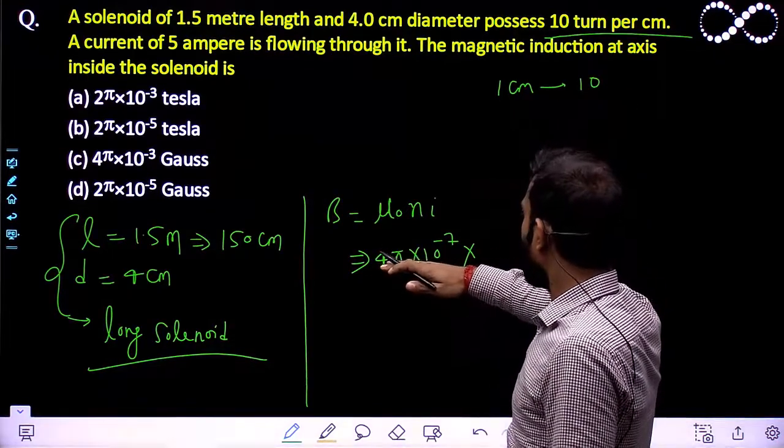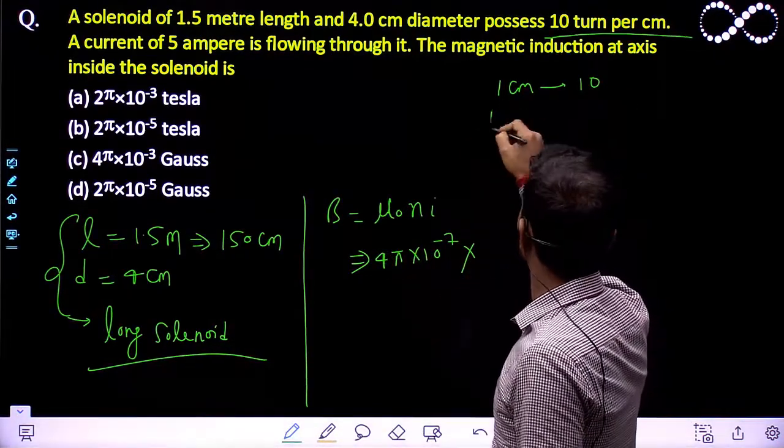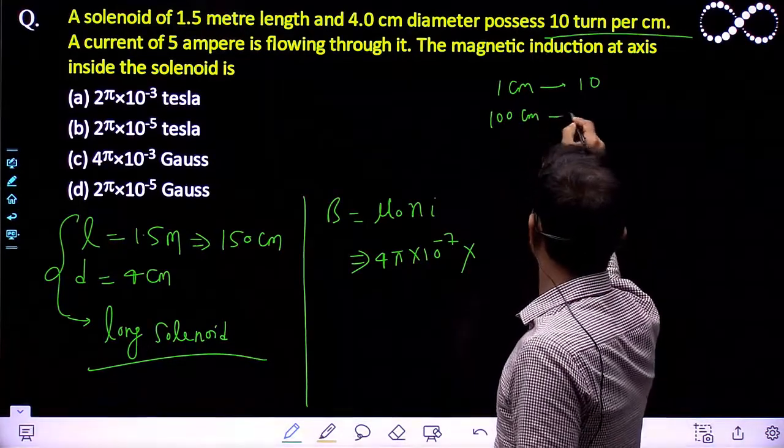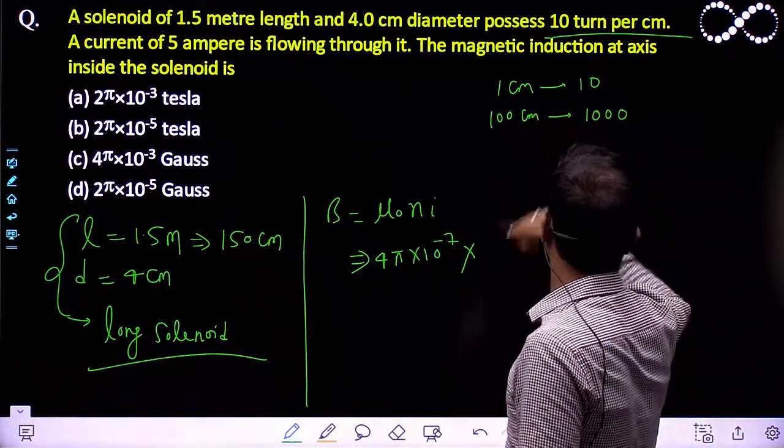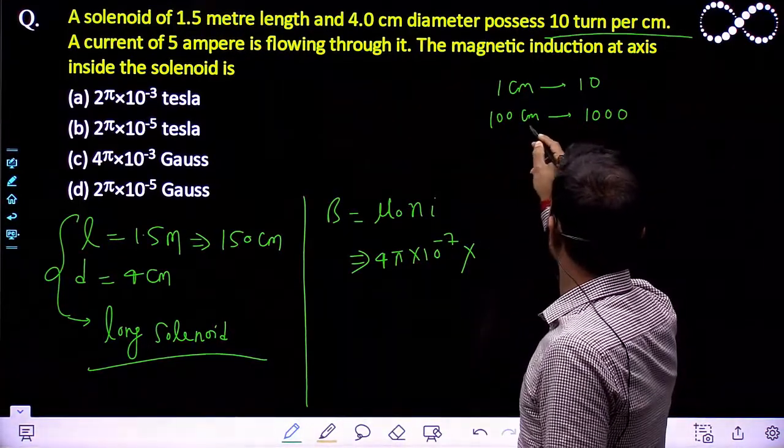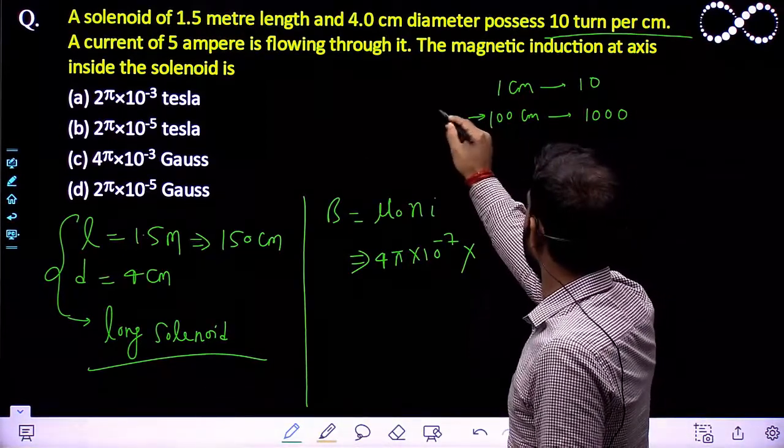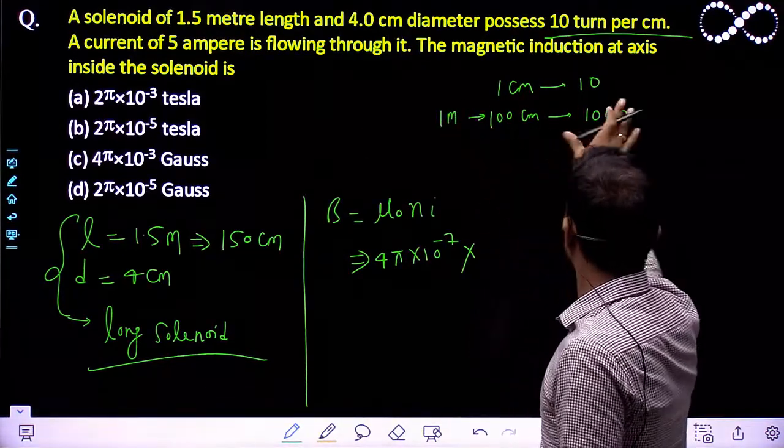I want to take all the values in SI system. In the 100 centimeter the number of turns will be 1000. 100 centimeter is nothing but 1 meter. I can say in 1 meter the number of turns are 1000.